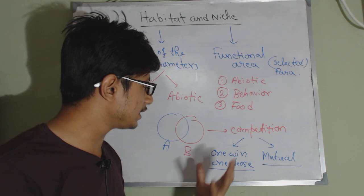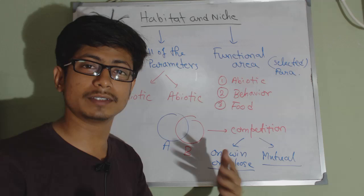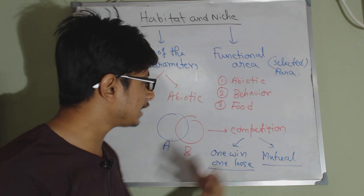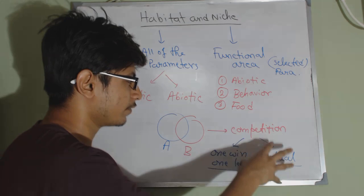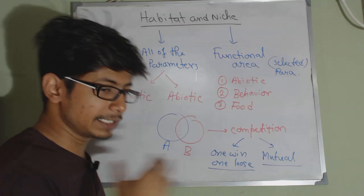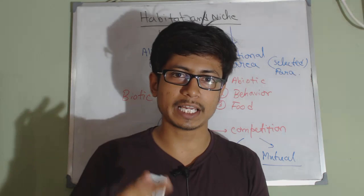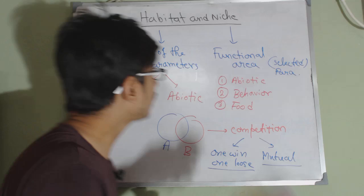When competition arises, there are two options. One is a fight between the organisms — the superior will win and the inferior will lose; the loser may go extinct. On the other hand, they can reach a kind of mutual understanding by compromising some part of their niche and survive together in that environment. In this video, we are going to talk about the details of niche, and there are two types: fundamental niche and realized niche.